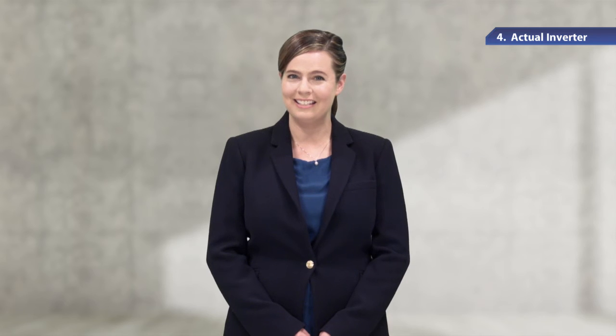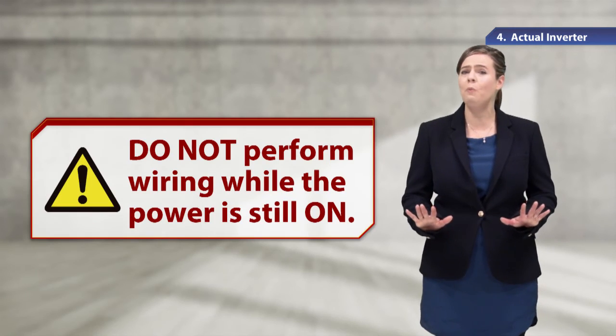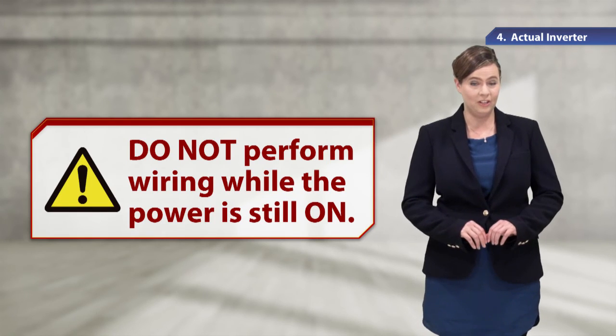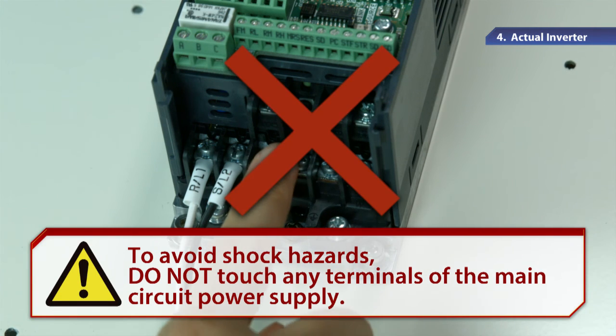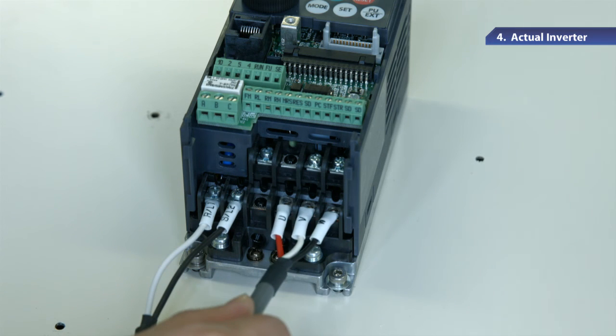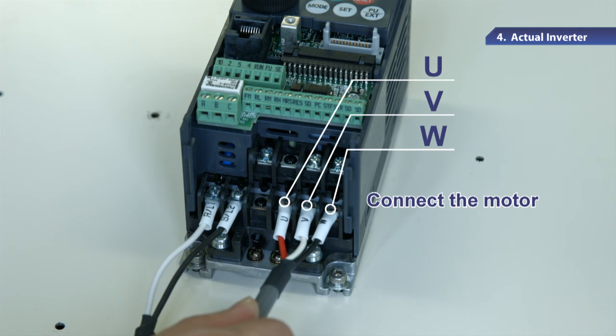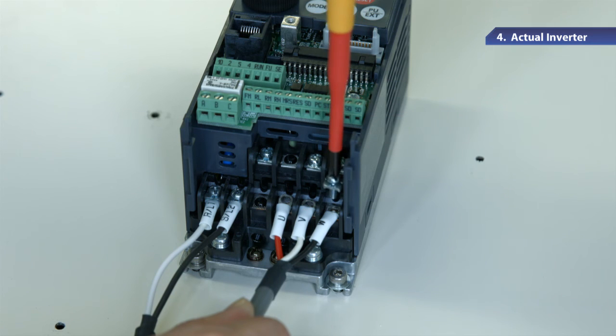Let's connect the motor next. Do not attempt any wiring work while the power is still on. To avoid shock hazards, do not touch any terminals of the main circuit power supply. Use the main circuit terminals U, V, and W of the inverter to connect the motor.